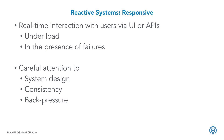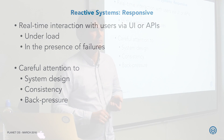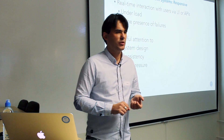Finally, responsive: your system should fulfill the business requirements of responding to user requests via the user interface or application requests via APIs. This should happen under varying load conditions and in the presence of failures of subcomponents or hardware. Despite all the benefits promised by reactive systems, you will still have to think about system design, consistency guarantees, and back pressure.